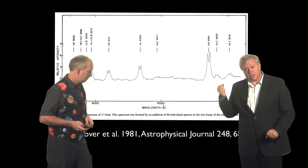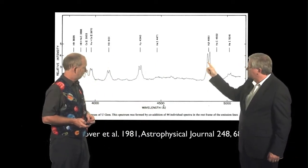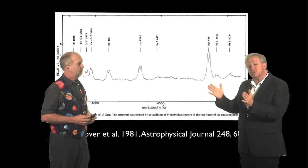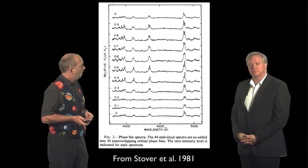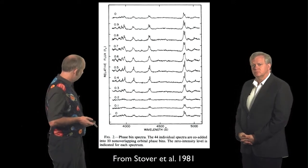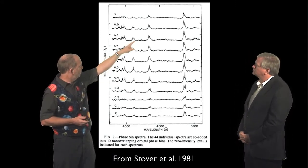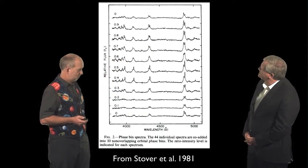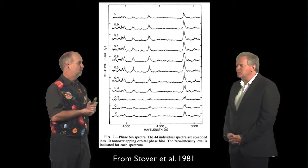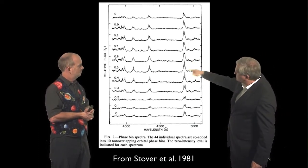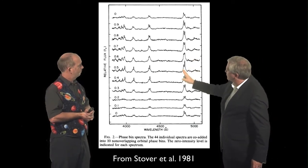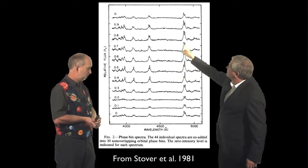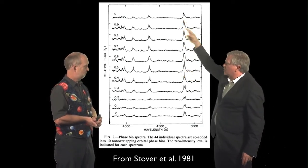So we have a prediction: if there are jets coming out, we should see the lines split, then come together, then split again, depending on when we look at the data — assuming the jets are always aimed towards the star. And here's what we actually see. Here's the phase, telling you where in the orbit it is, and there's the spectrum of these hydrogen lines. We always see the two lines, so they don't seem to be moving, but they do change a bit in brightness — sometimes the stuff moving towards us is not as bright, and sometimes it's brighter.